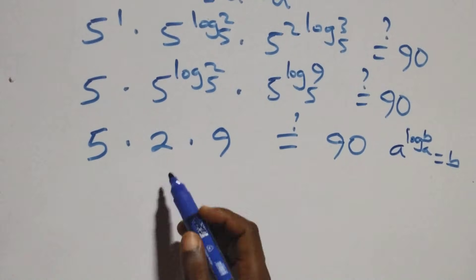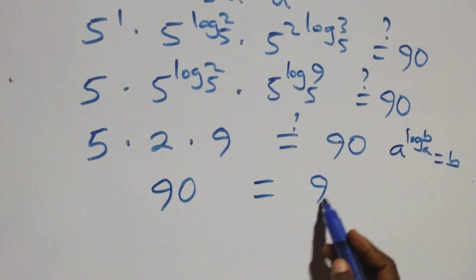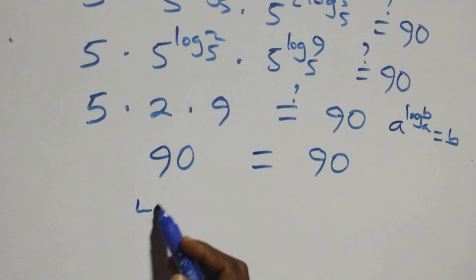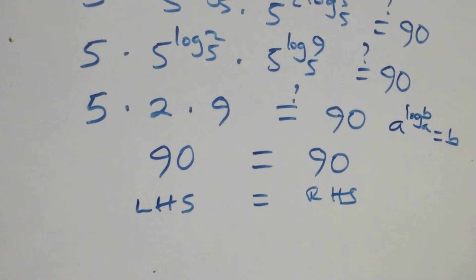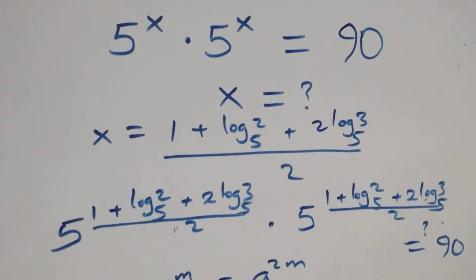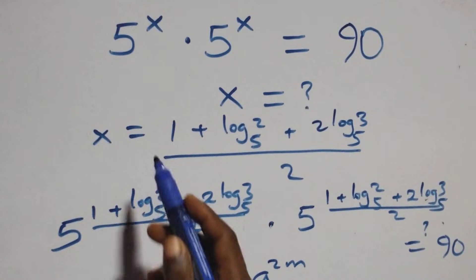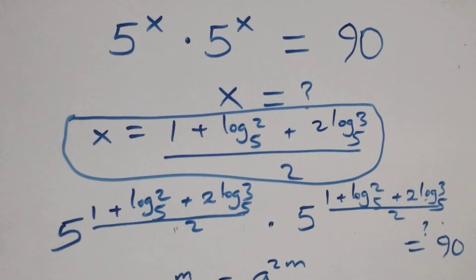5 times 2 times 9 gives 90, equals 90. The left hand side equals the right hand side, therefore it is proven. Thank you for watching. Don't forget to subscribe for more videos and turn on your notification bell, share this video, give me a thumbs up and put your comments. See you next class, bye for now.